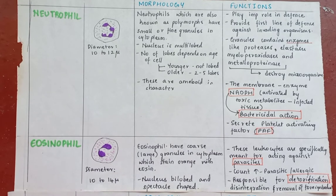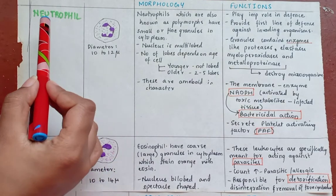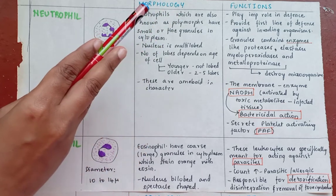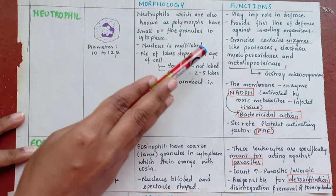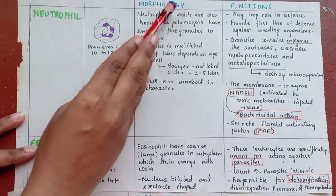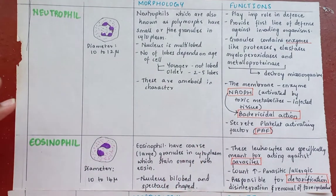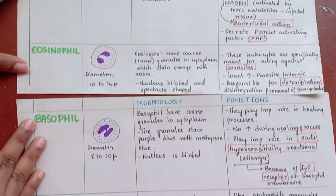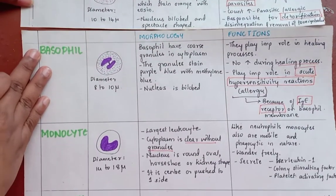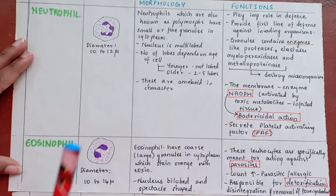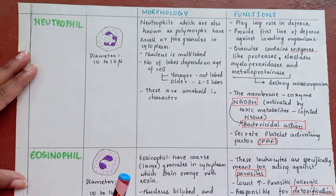I have prepared charts of all 5 types of leukocytes based on name, diagram, morphology, and functions. This is how I have prepared the chart so that it will be easy for you to understand.